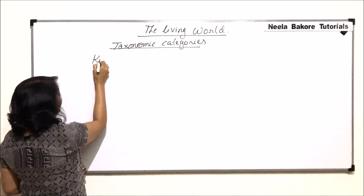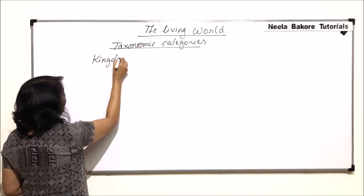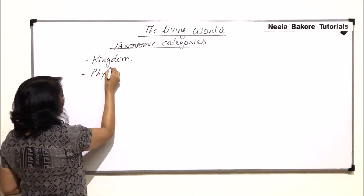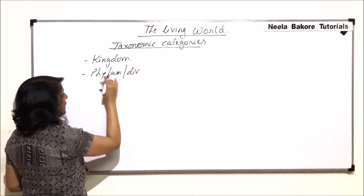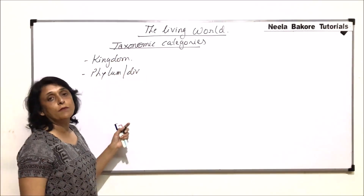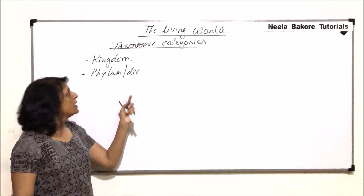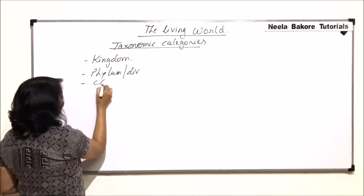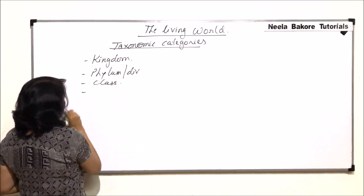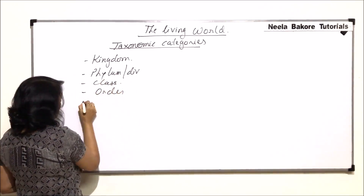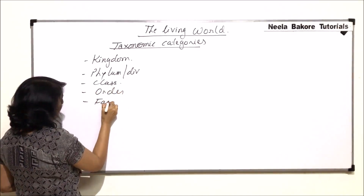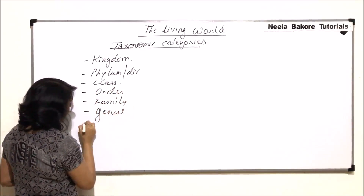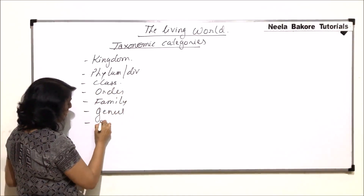The top or the biggest group is kingdom. After kingdom comes phylum or division. Phylum is used when we are talking of animals, and division is used when we are talking of plants. Then there are classes. In class would be order. In orders would be families. In families would be genus. And the lowest or the smallest is the species.